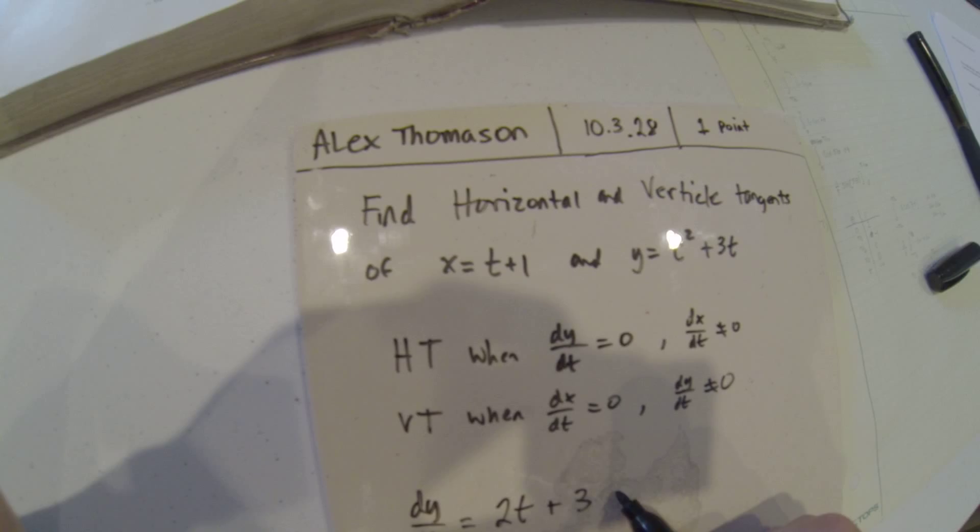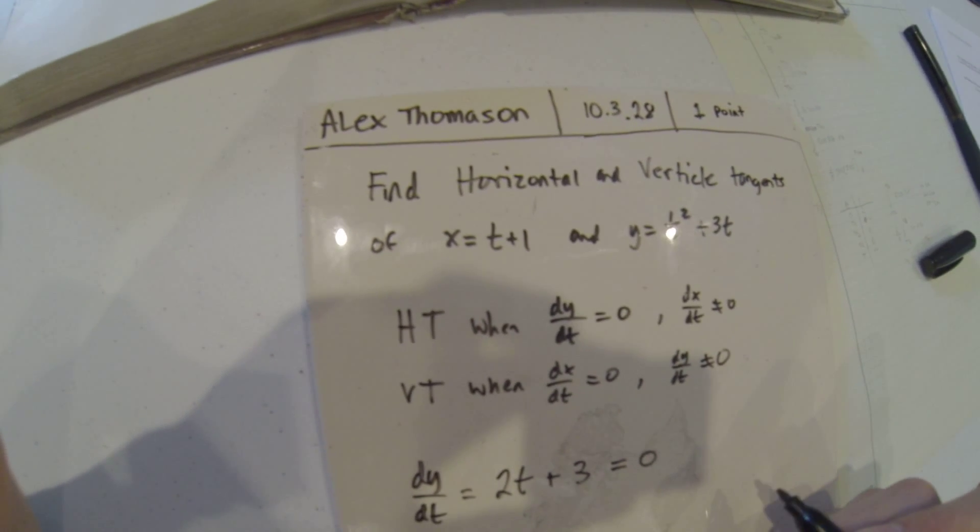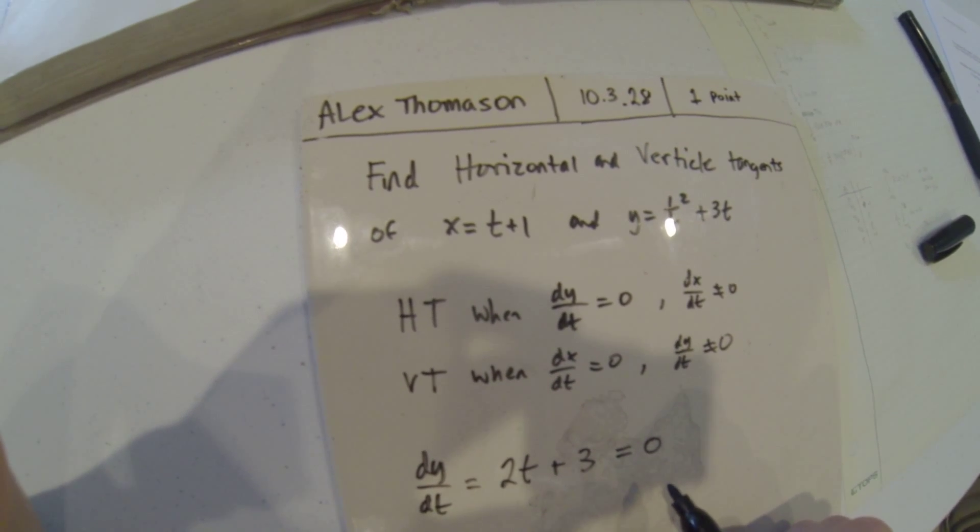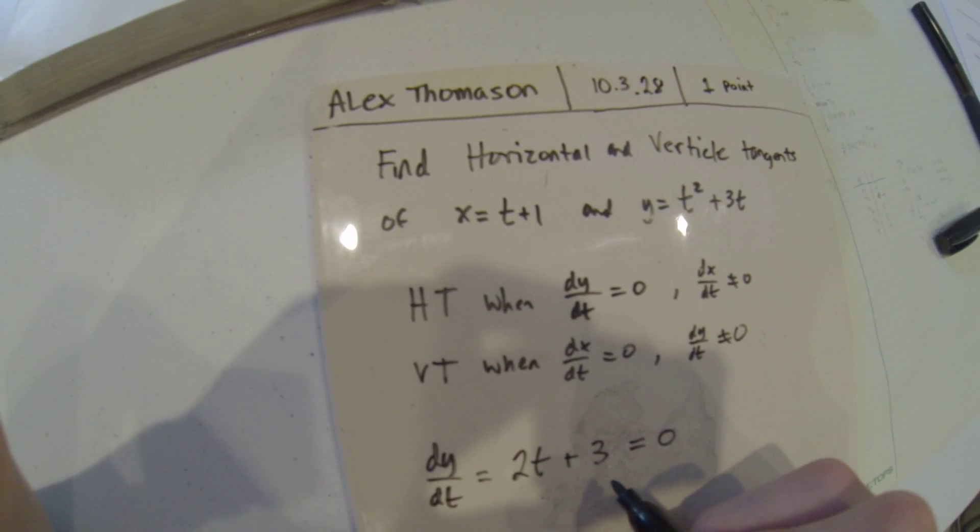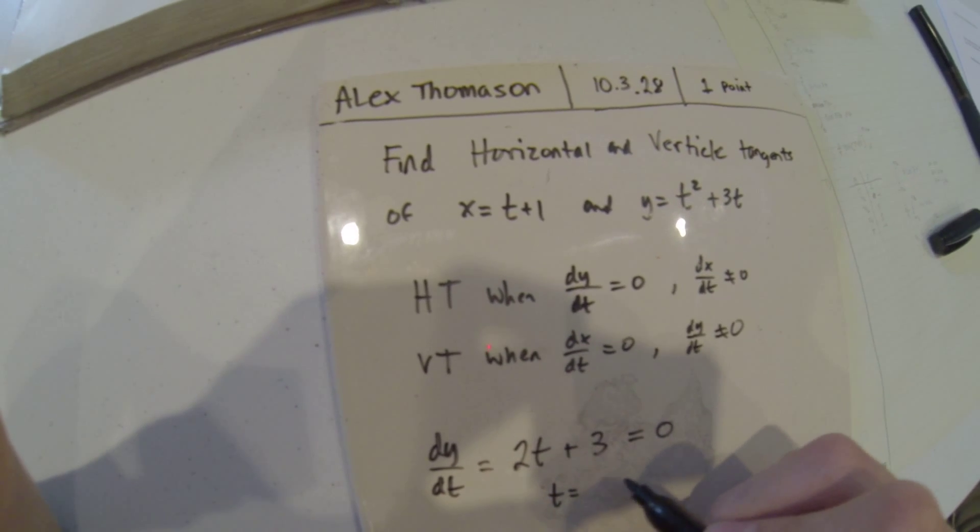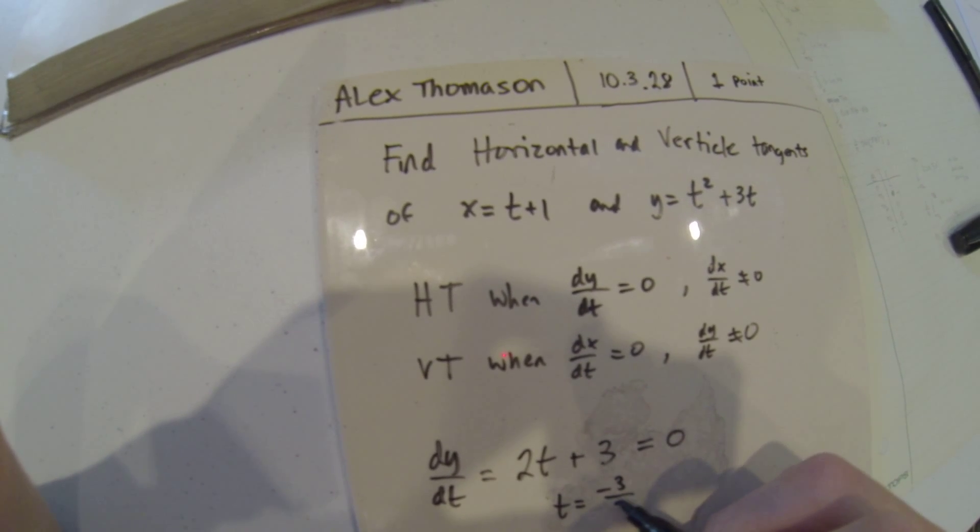And we have to see when that equals 0 for a horizontal tangent. So all we have to do is solve and we have t equals minus 3 over 2.